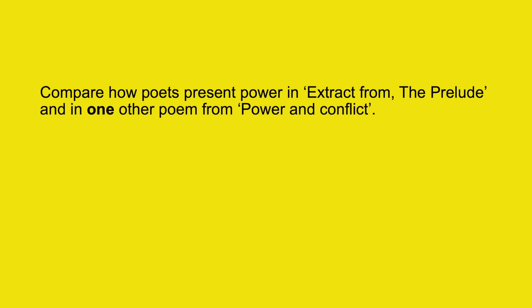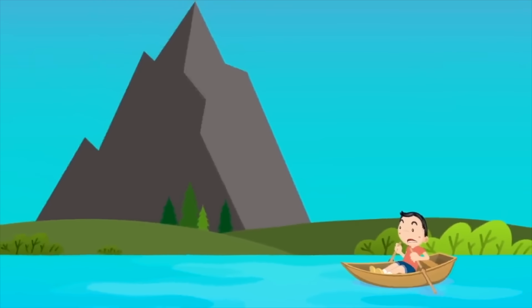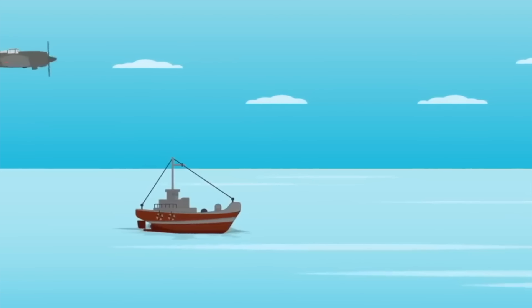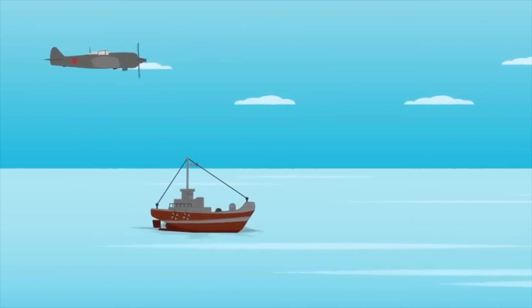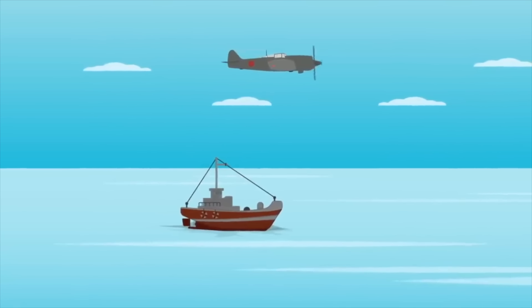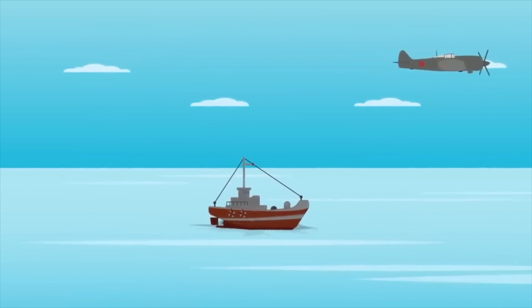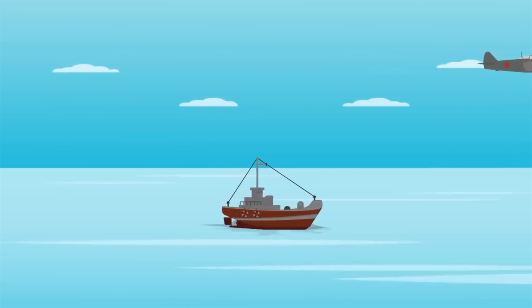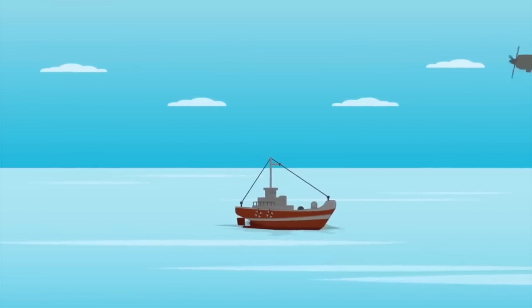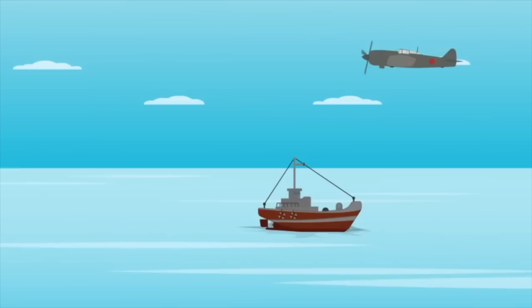Let me give you an example. Imagine you have a question on power in Extract from the Prelude and you come up with the idea 'nature is powerful' and you choose your second poem Kamikaze. You've only got one point to make, so what's going to happen is you'll write paragraph after paragraph showing how nature is powerful — and basically there'll be no movement or progression in the answer.